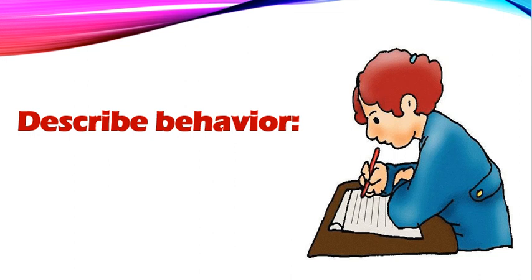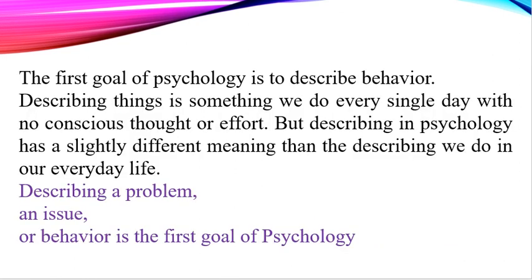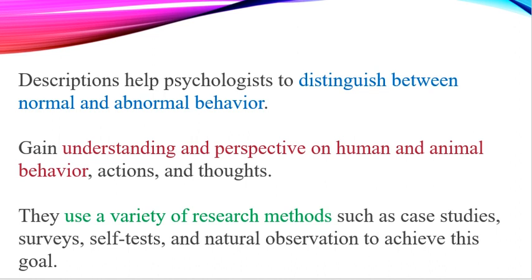The first goal of psychology is to describe behavior. Describing things is something we do every single day with no conscious thought or effort, but describing in psychology has a slightly different meaning than the describing we do in our daily lives. Description helps psychologists to distinguish between normal and abnormal behavior. Psychologists use a variety of research tools such as case studies, survey methods, self-tests, and observational methods to achieve the goal of description.